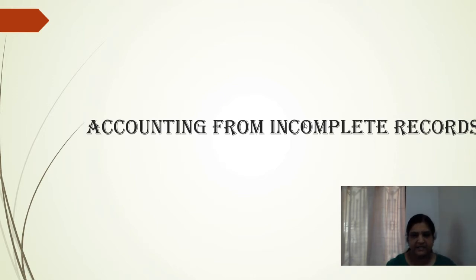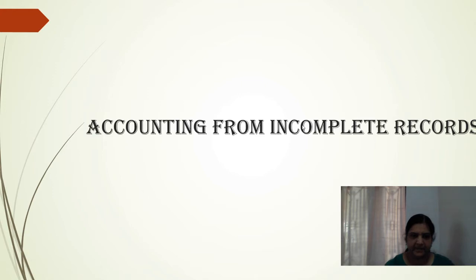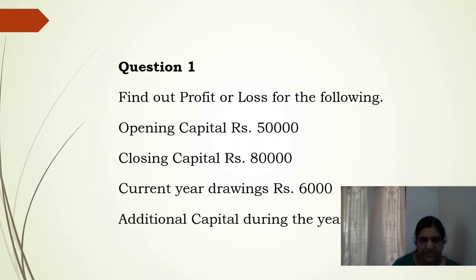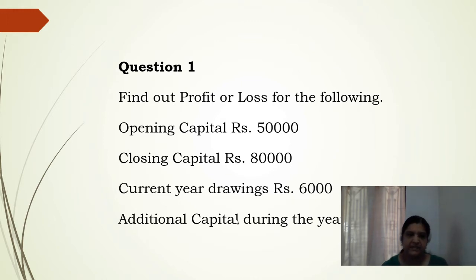These were the things discussed earlier. Now we can move on to the problem part. The statement of affairs format has already been discussed. This is the first question: find out profit or loss — opening capital is ₹50,000, closing capital ₹80,000, current year's drawings ₹6,000, and additional capital during the year ₹10,000.